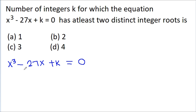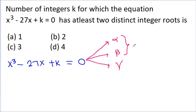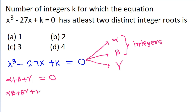Since it is a cubic equation, it must have three roots. Suppose the roots are alpha, beta, and gamma. From this cubic equation, we can get: sum of roots alpha + beta + gamma = 0 (coefficient of x² is 0); alpha·beta + beta·gamma + gamma·alpha = -27 (coefficient of x); and alpha·beta·gamma = -k.